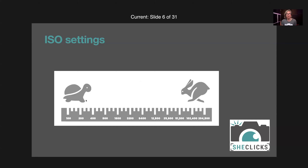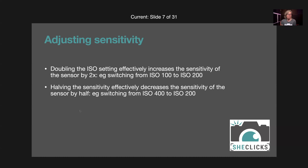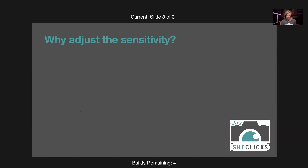Doubling the ISO effectively increases the sensitivity of the sensor by two times — so going from ISO 100 to ISO 200 doubles the sensitivity. Halving the ISO decreases the sensitivity by half — switching from ISO 400 to ISO 200 means the camera is less responsive to light.